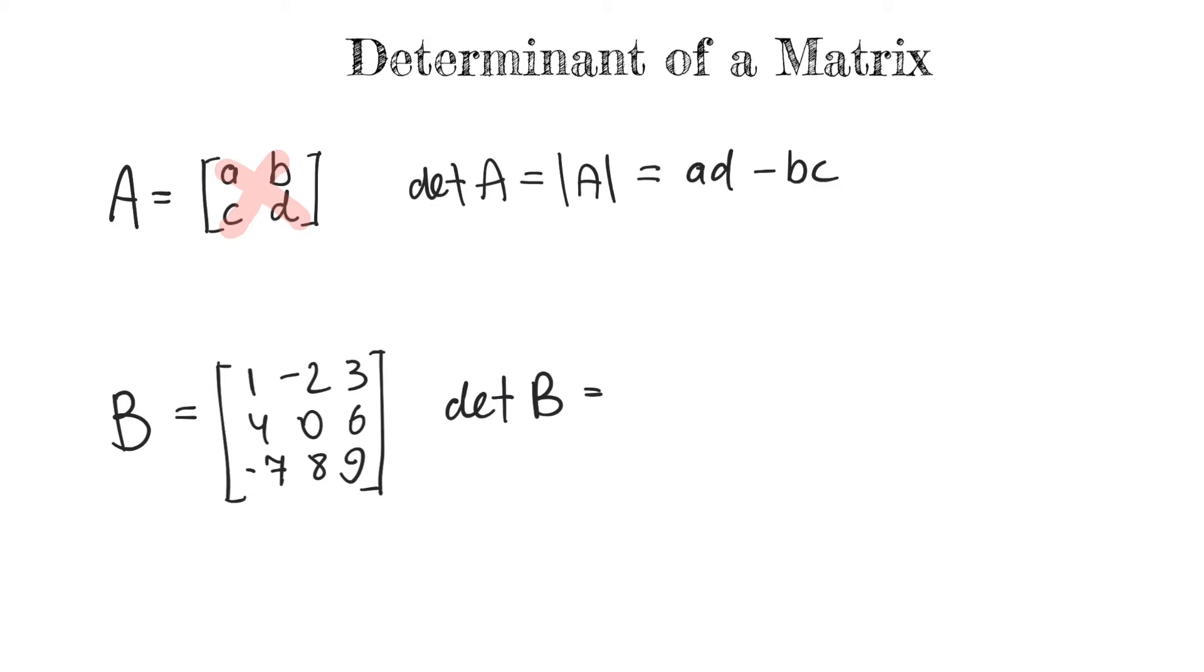So, let's start by taking this first number in the second column. And what we do is we cross off the row to which it belongs and the column to which it belongs. So, and what this results in is we have this smaller 2x2 matrix. So, it equals to negative 2 multiplied by this 2x2 matrix that we get when we cross off the row in the column to which this number belongs and it's 4, 6, negative 7, and 9.